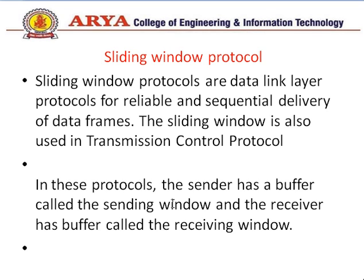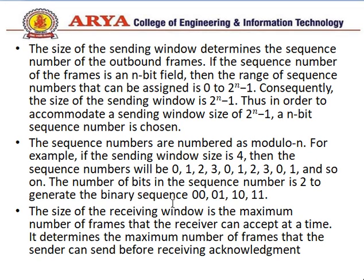The next is the Sliding Window Protocol. Sliding window protocols are data link layer protocols for reliable and sequential delivery of data frames, and are also used in TCP. The sender has a buffer called the sending window and the receiver has a buffer called the receiver window. The size of the sending window determines the sequence numbers of outbound frames. If the sequence number field is n bits, the range is 0 to 2^n minus 1, so the sending window size is 2^n minus 1 and sequence numbers are numbered modulo n. For example, with window size 4, sequence numbers cycle as 0, 1, 2, 3, 0, 1, 2, 3, and so on.